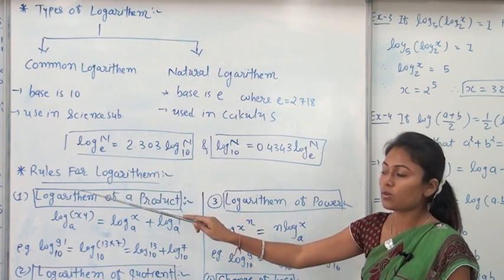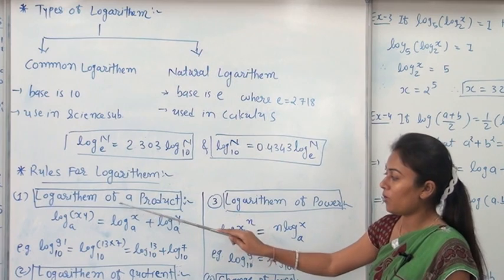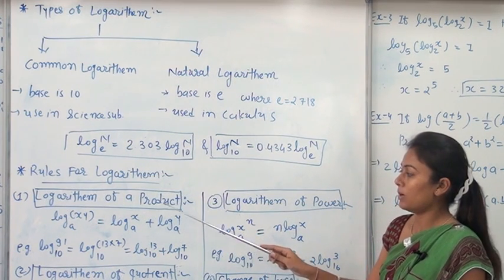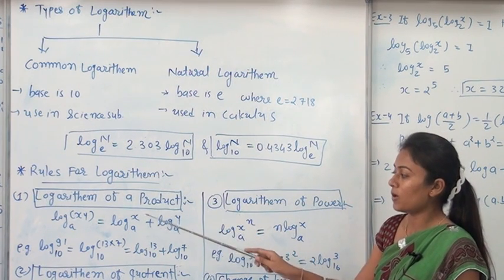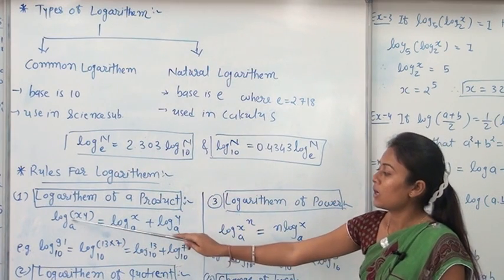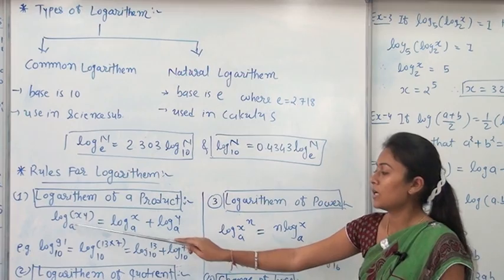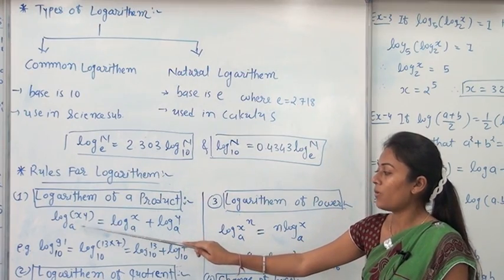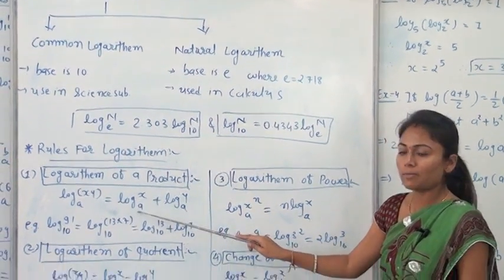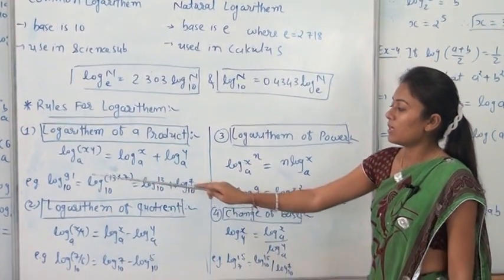Next, we discuss the rules of logarithm. The first rule is the logarithm of a product. If x and y are two numbers in a product, then log of x into y base A is equal to log x base A plus log y base A.